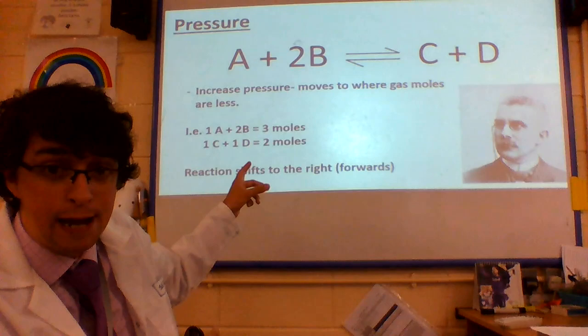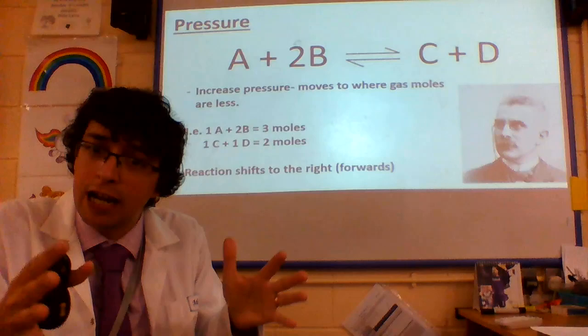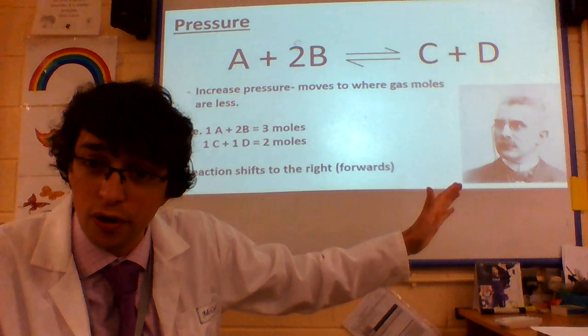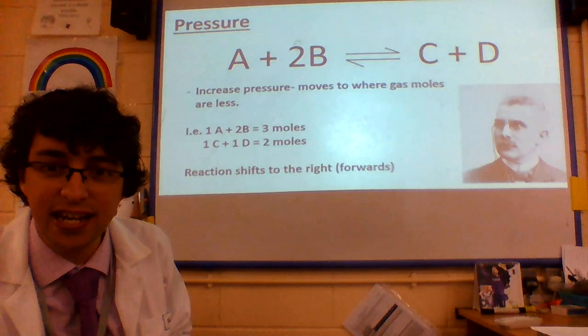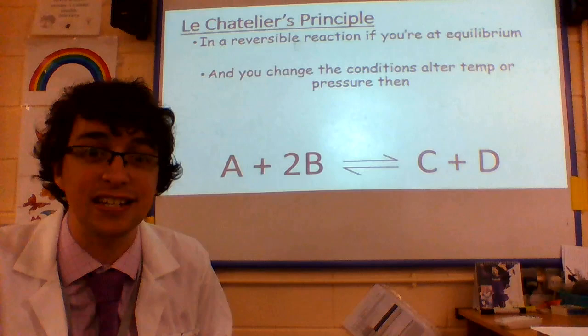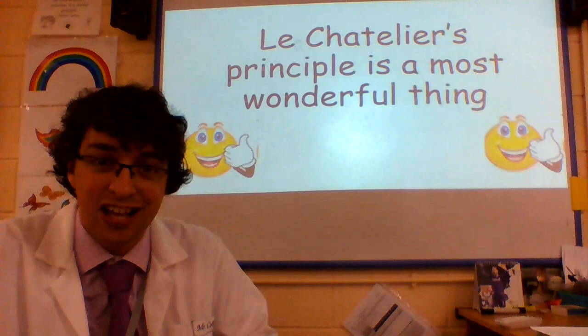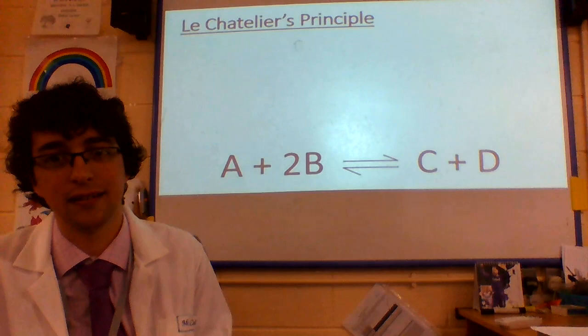Let's look at pressure. If we change the pressure, you simply add up the molecules on each side. So A plus 2B gives you three molecules. C and D gives you two molecules. If you increase the pressure, which way is it going to force the reaction? To the right — shift it forward — because there are more molecules on the left than on the right. In a reversible reaction, if you're at equilibrium and you change the conditions — alter temp or pressure — the system will counteract the change to balance things again. Le Châtelier's Principle is a most wonderful thing.